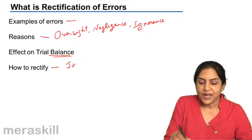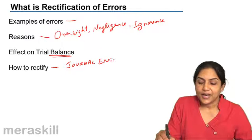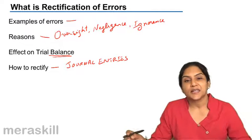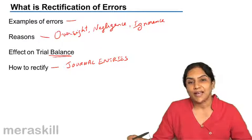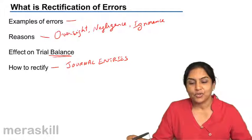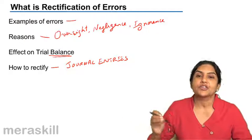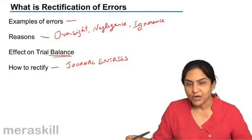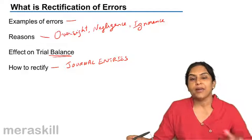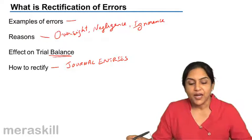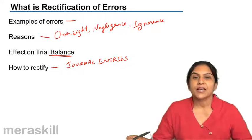How do we rectify? Like I said before, we rectify by passing certain journal entries. Sometimes they are entries, sometimes they are corrections which we have to incorporate into the ledger accounts. Rectification of errors is nothing but correction of certain mistakes which have been made in the books of account - either at the time of recording, or at the time of posting, or while taking the balances to the trial balance.